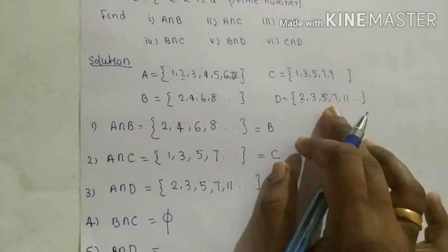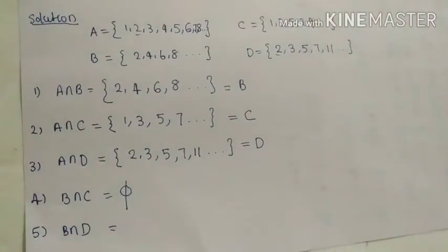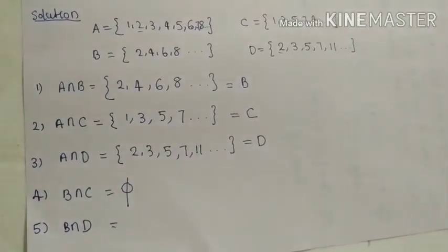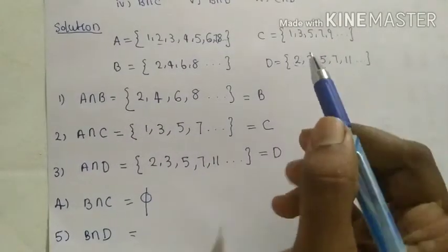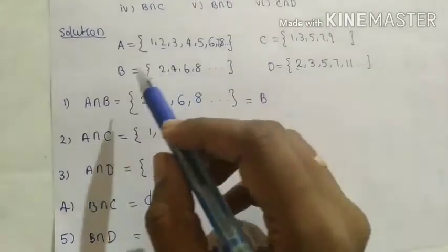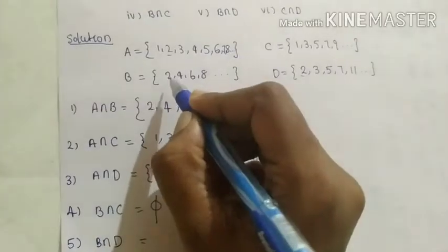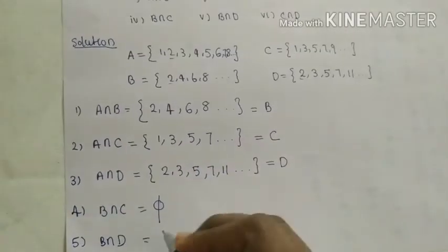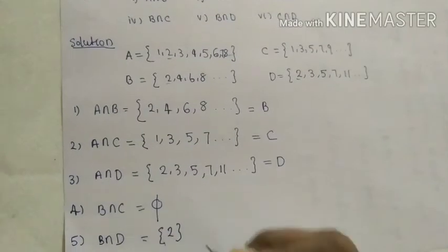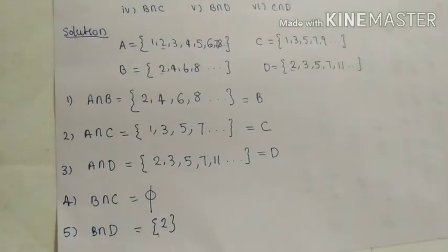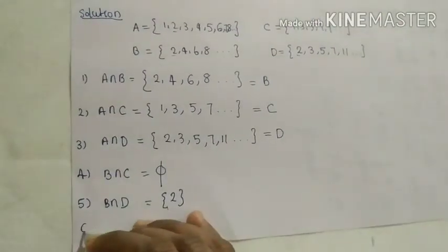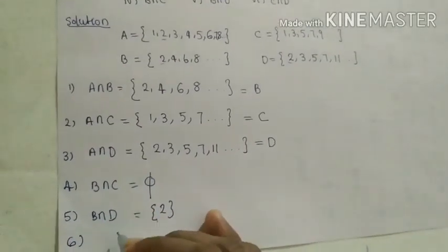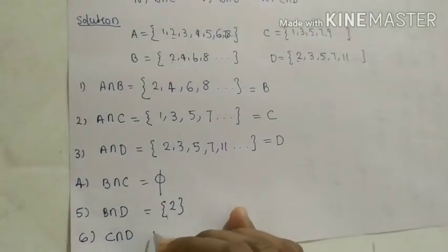Next we need to find B intersection D. B is the set of all even natural numbers and D is the set of all prime numbers. The only element common in both B and D is 2. So B intersection D equals {2}.